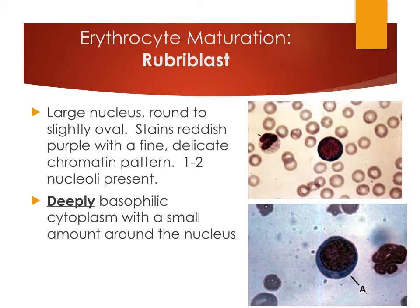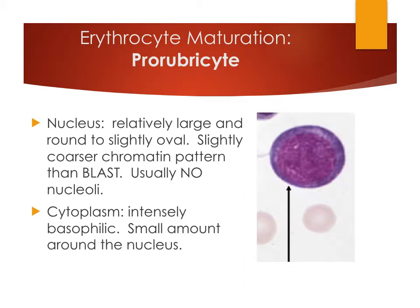As the cell matures into the prorubrocyte, the nucleus starts to get smaller, so we see a larger volume of cytoplasm relative to the nucleus. The nucleus remains pretty large and round, but the chromatin pattern starts to get clumpier and more coarse, and usually there are no nucleoli. The cytoplasm is still very dark bluish-purple.